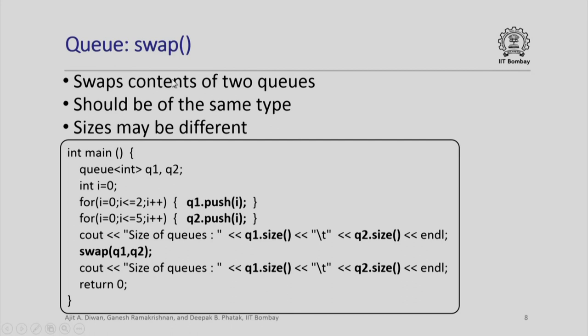There is a swap function which is a more complex function. It swaps contents of two queues. The queues must be of the same type, the sizes may be different. Please note that this swap function is exactly like the swap function that we had for stacks.